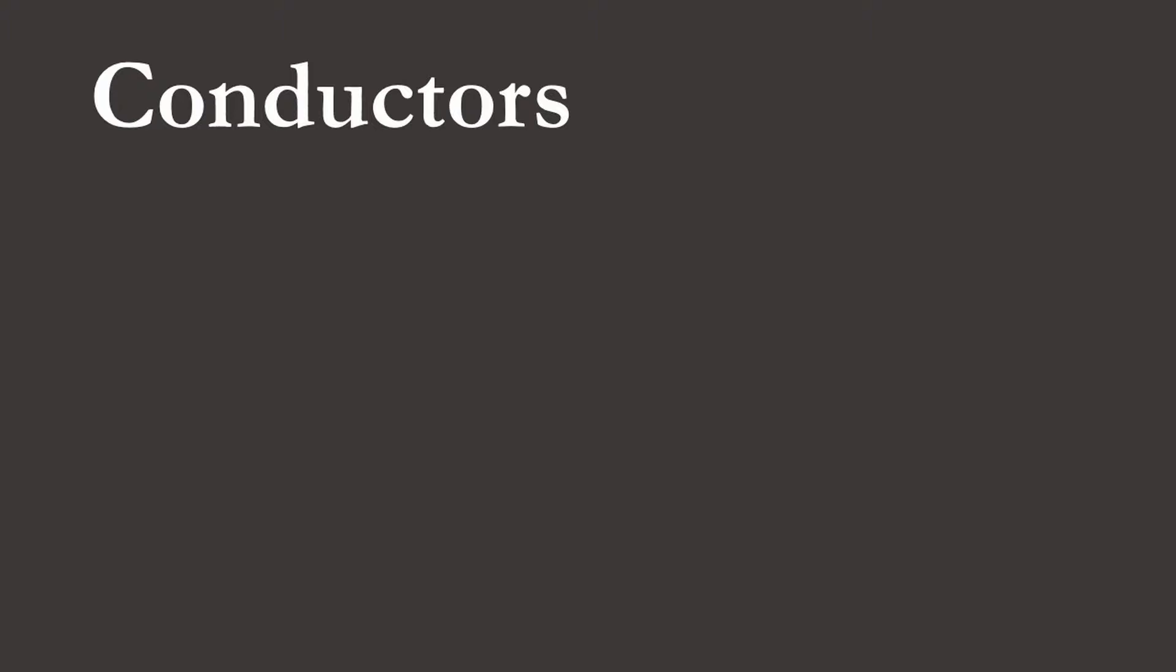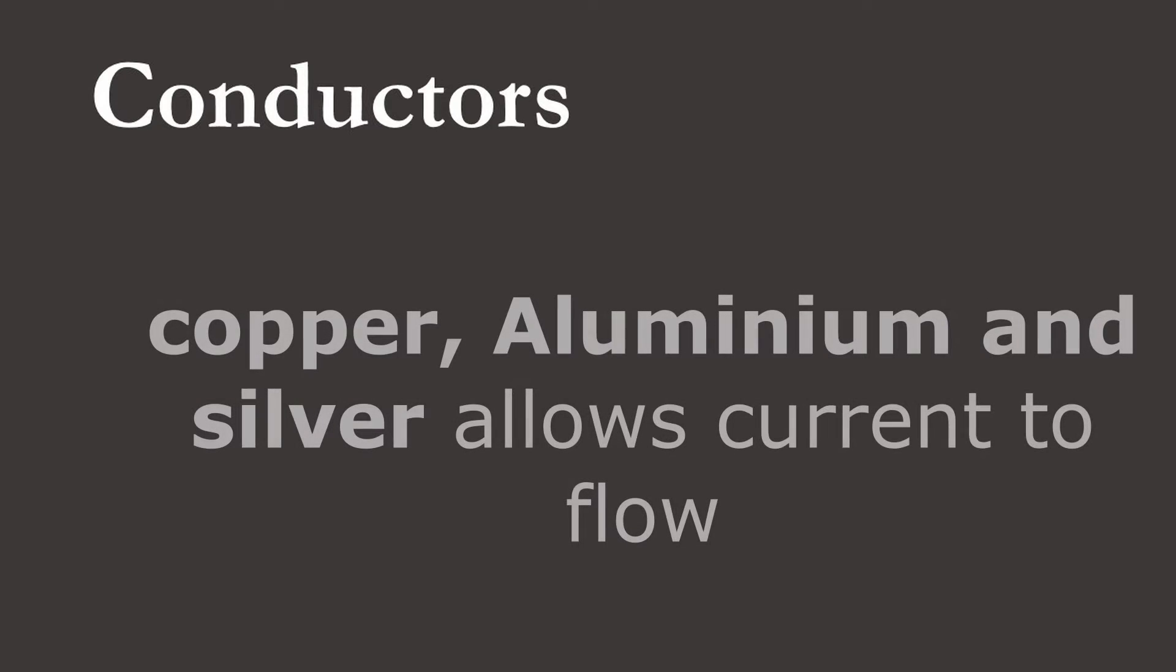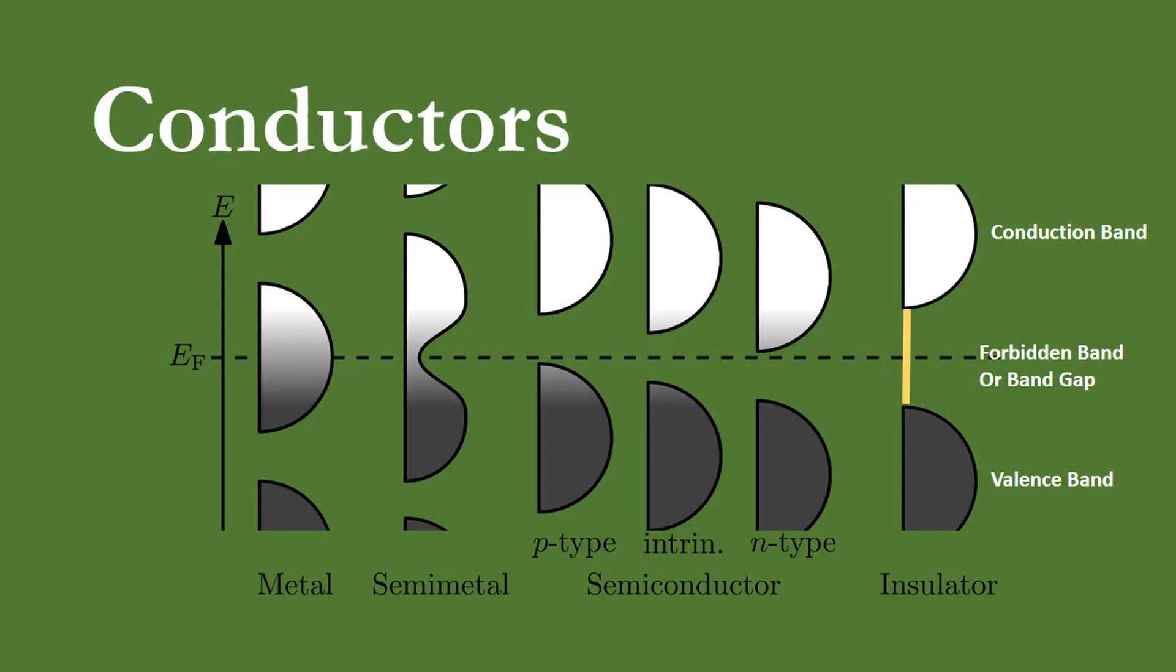Substances like copper, aluminum, and silver which allow the passage of current through them are conductors. The valence band of these substances overlaps the conduction band. Due to this overlapping, a large number of free electrons are available for conduction. This is the reason why a slight potential difference applied across them causes a heavy flow of current through them.